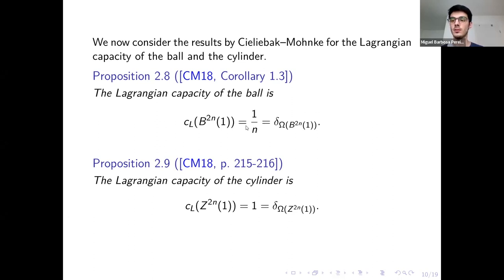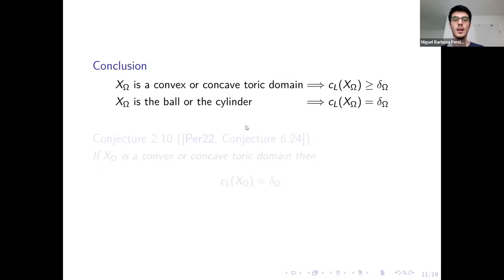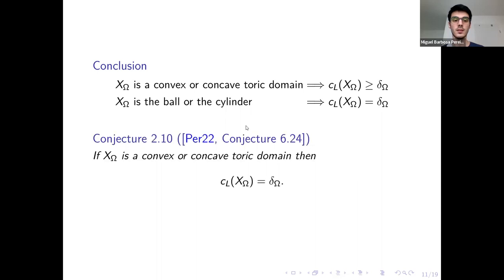Now let's put everything together. On one hand, we have seen that if X_omega is a convex or concave toric domain, then its Lagrangian capacity is greater or equal to the diagonal. On the other hand, if X_omega is either the ball or the cylinder, then we have equality. This motivates the conjecture I stated at the beginning: do we have equality for every convex or concave toric domain?